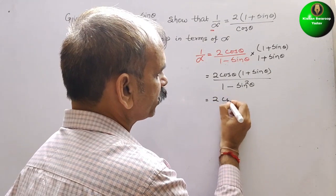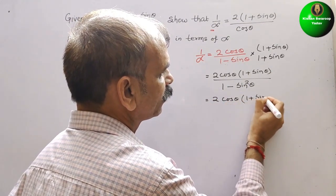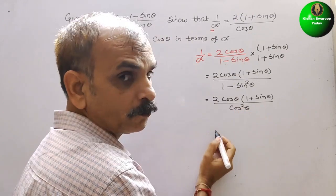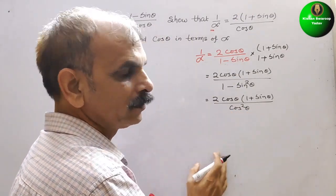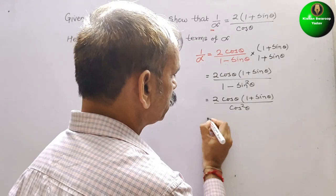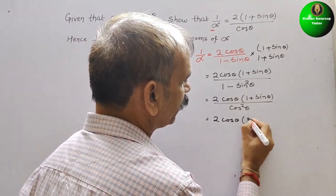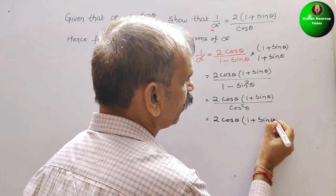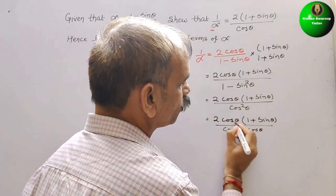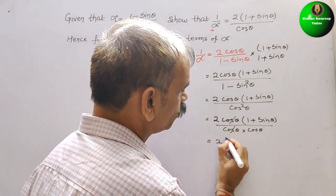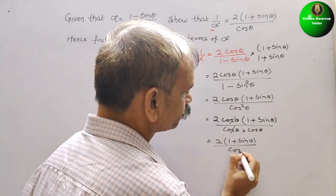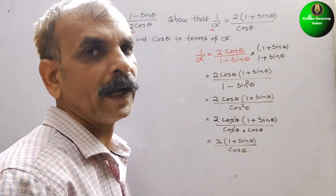So the expression becomes 2 cos theta times (1 plus sin theta) divided by cos squared theta. The cos theta in the numerator and one cos theta in the denominator cancel out, and we get 2 times (1 plus sin theta) divided by cos theta. This is what we had to prove.